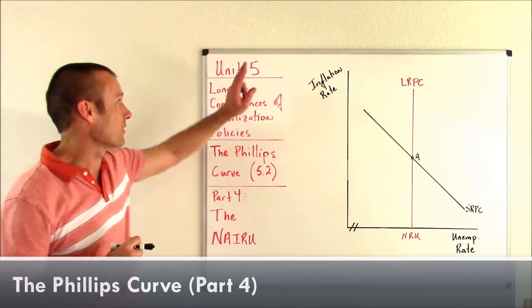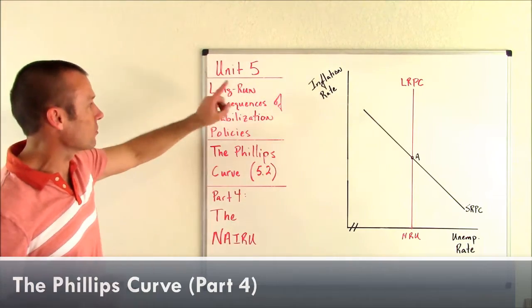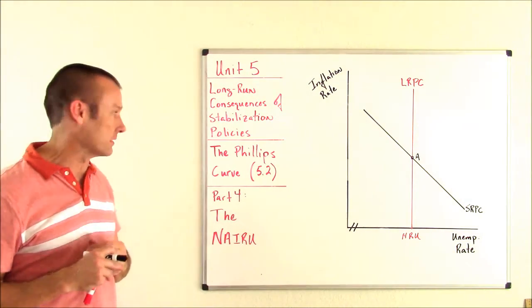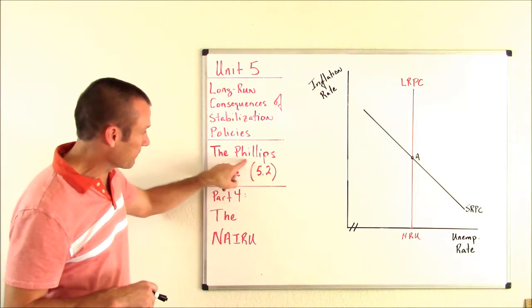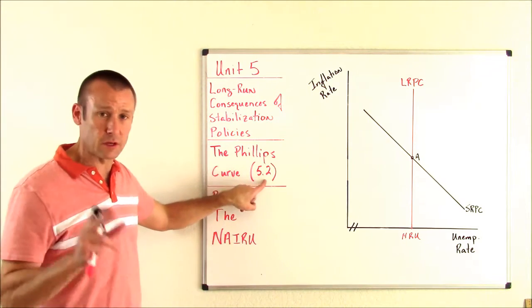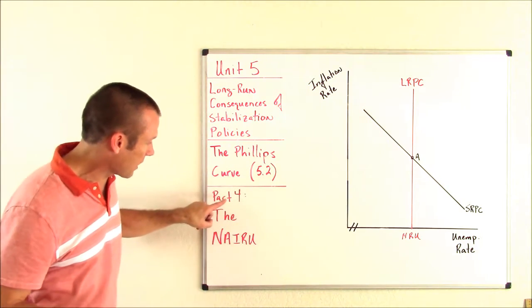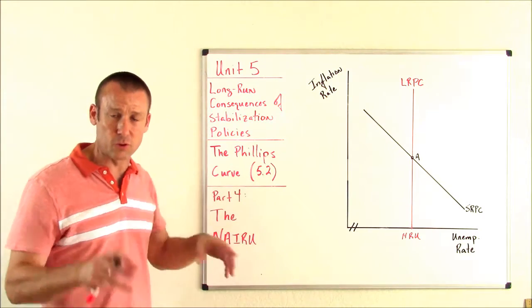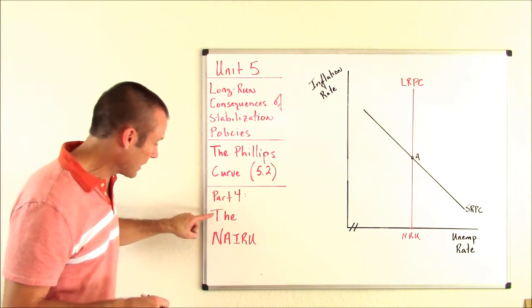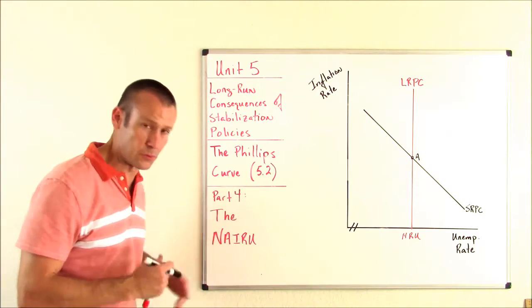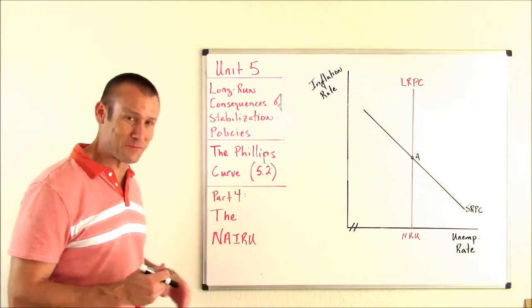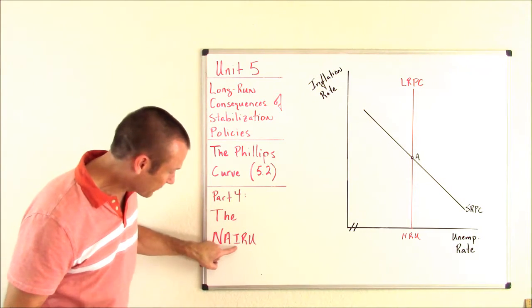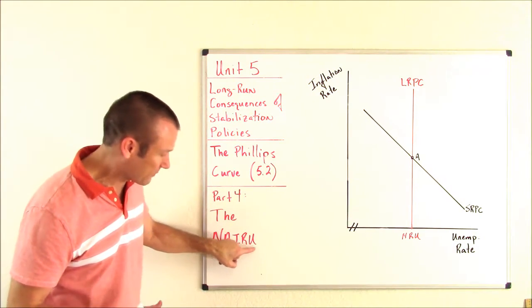Welcome back. We are on unit 5, the long-run consequences of stabilization policies. Inside this unit, we are on the Phillips curve, subunit 5.2, part 4 of 5.2. In this video we are focused on the NAIRU — the non-accelerating inflation rate of unemployment.